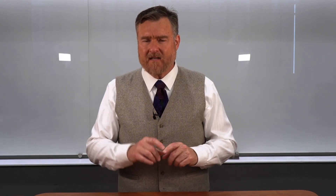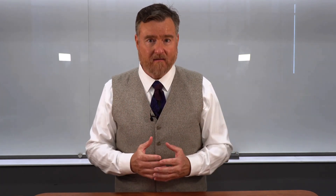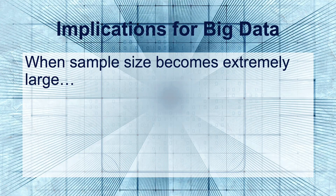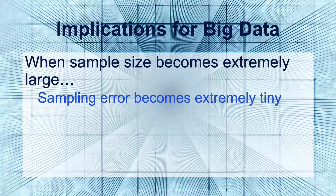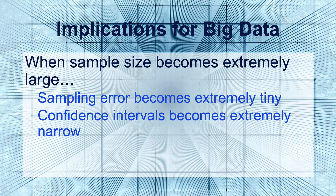But this idea about sample sizes and estimations has implications for big data as well. When sample size becomes extremely large — 10,000 or 100,000 data points — your sampling error becomes extremely tiny, which might seem like a wonderful benefit. However, this is going to shrink your confidence intervals.